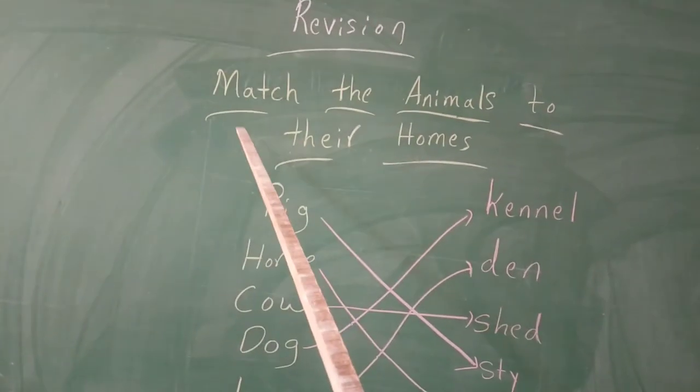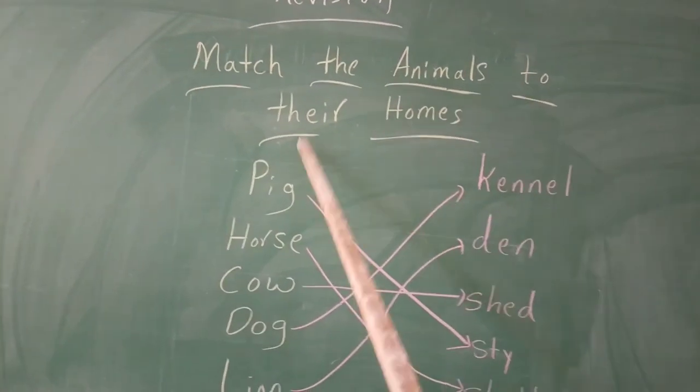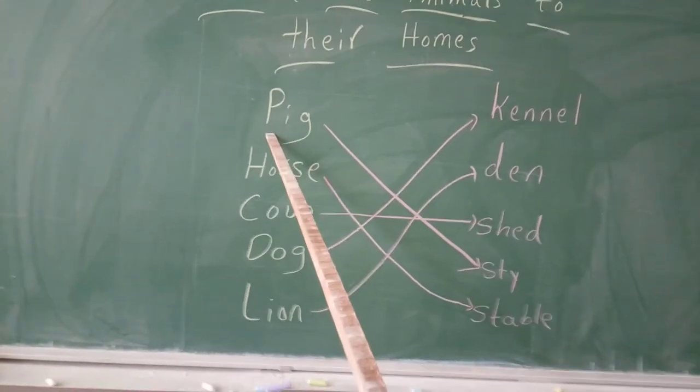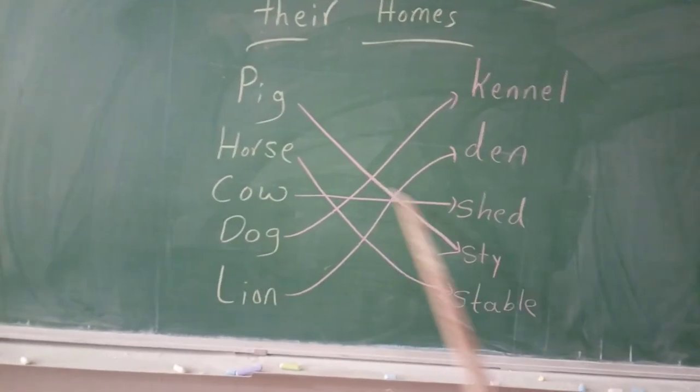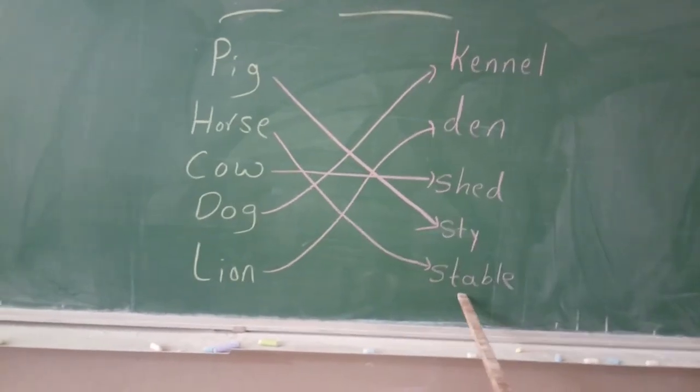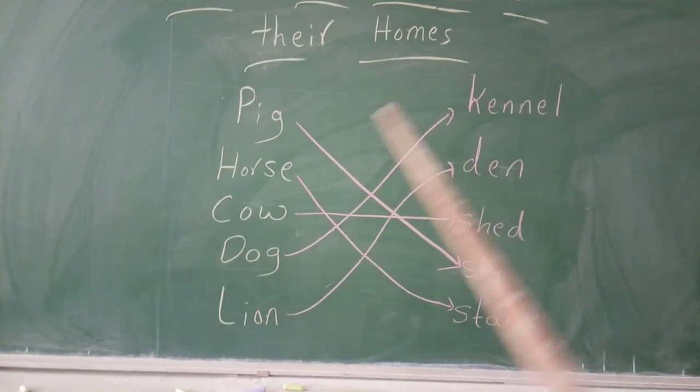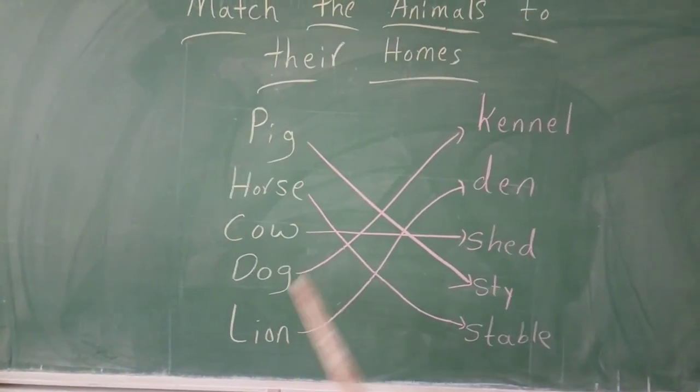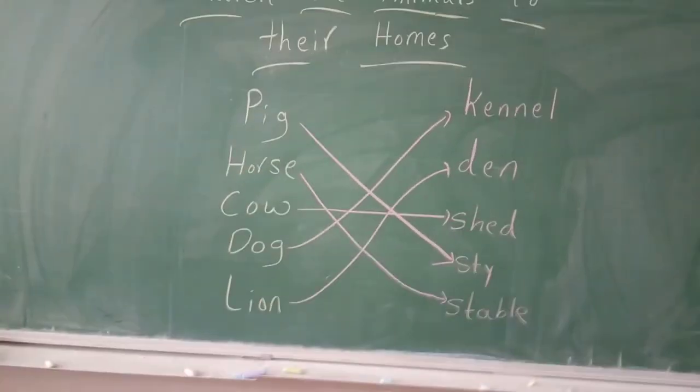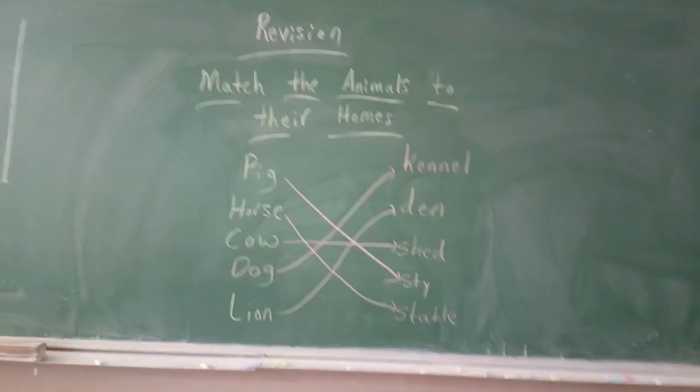See here children all of you. Match the animals to their homes. Pig goes to Sty. Horse goes to Stable. Cow goes to Shed. Dog goes to Kennel. Lion goes to Den. All of you practice in the home. Bye bye.